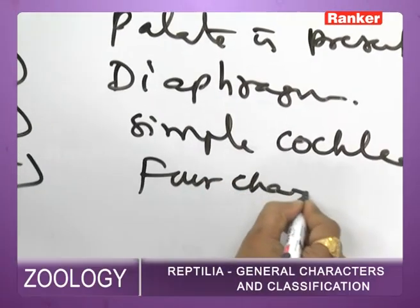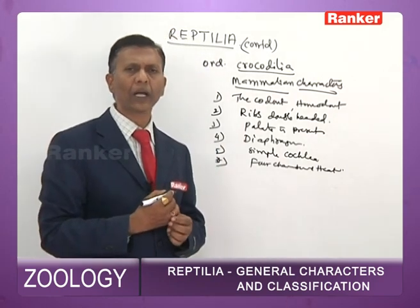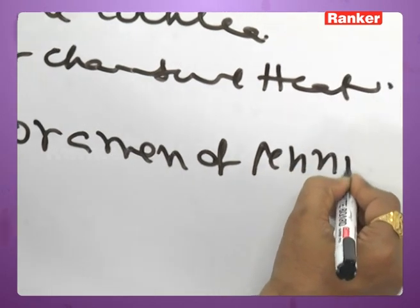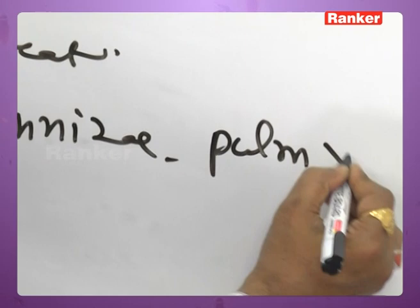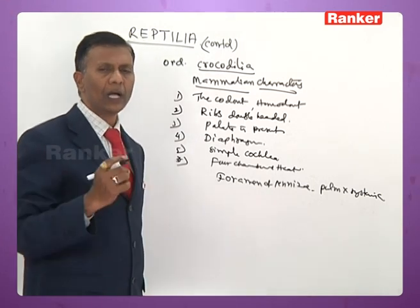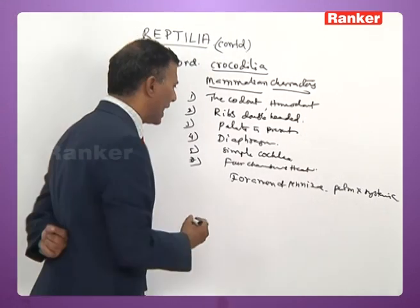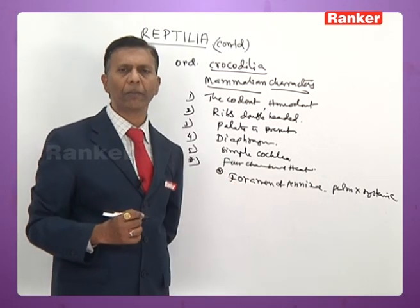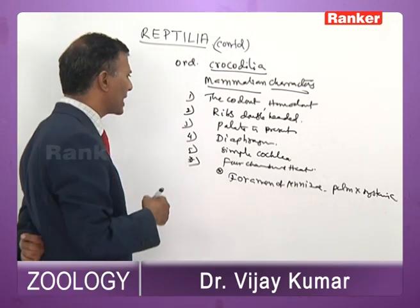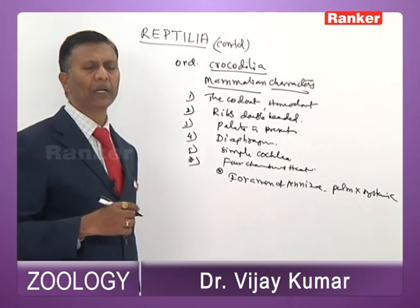Crocodiles have a well-developed four-chambered heart like birds and mammals. However, due to the presence of the Foramen of Panizza at the junction of the pulmonary and systemic arches, mixing of blood occurs. So despite the four-chambered heart, mixed blood is sent to the body — an important exam point.